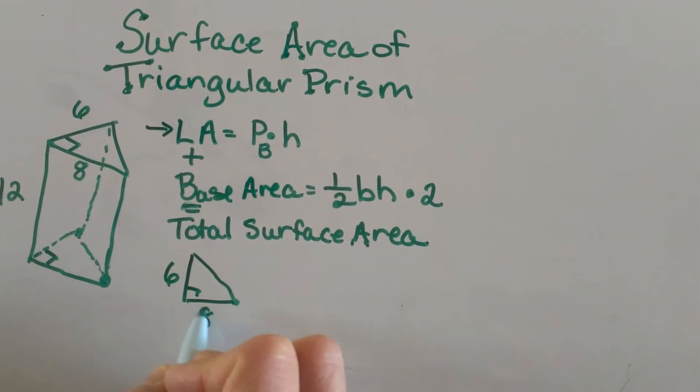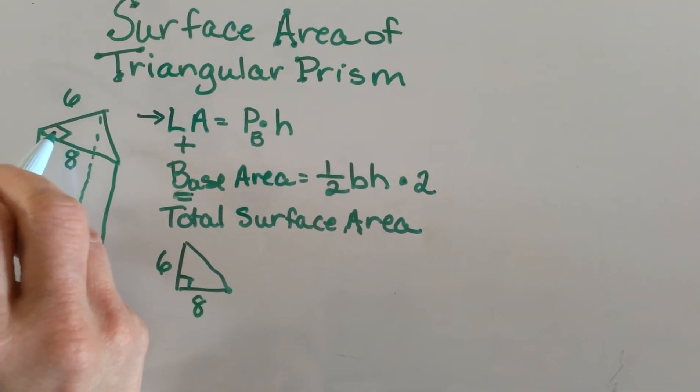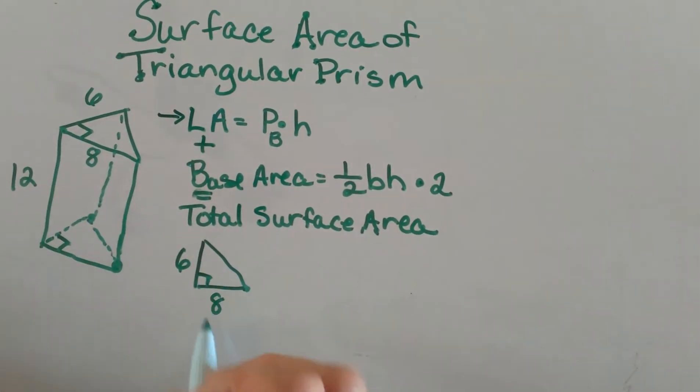It's 6 on this side, 8 on this side, and it's got a right angle in the corner here. So that means it's a right triangle.